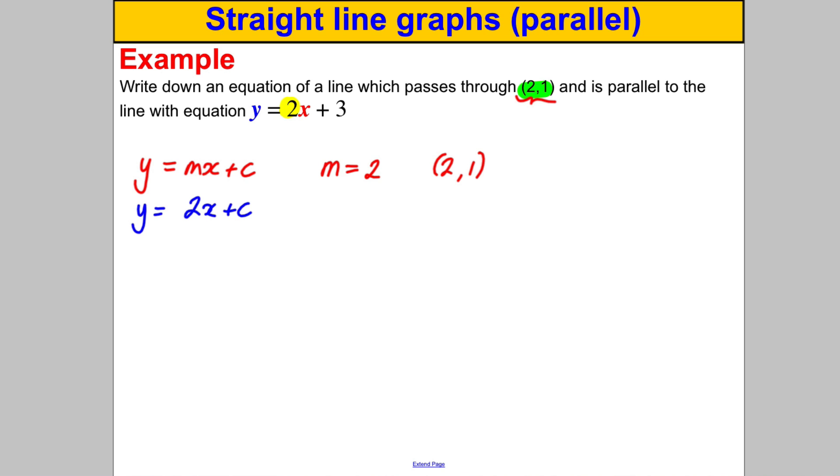Now we're going to substitute in X is 2 and Y is 1, so 1 is equal to 2 brackets 2 add C. 1 is therefore equal to 4 add C. Subtract 4 off both sides and we get C is negative 3.